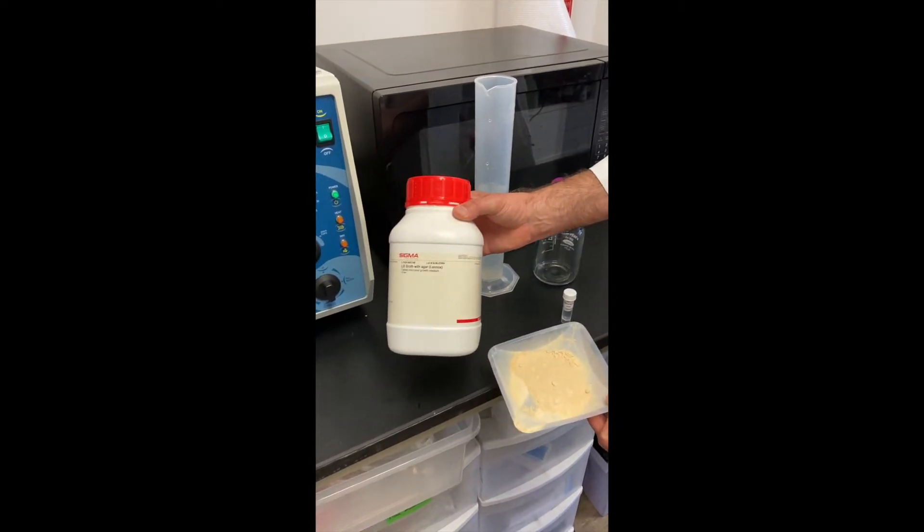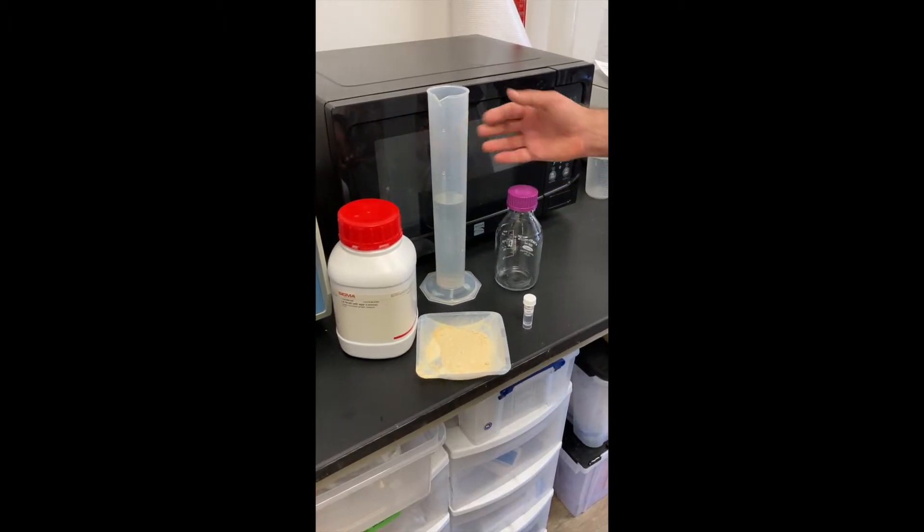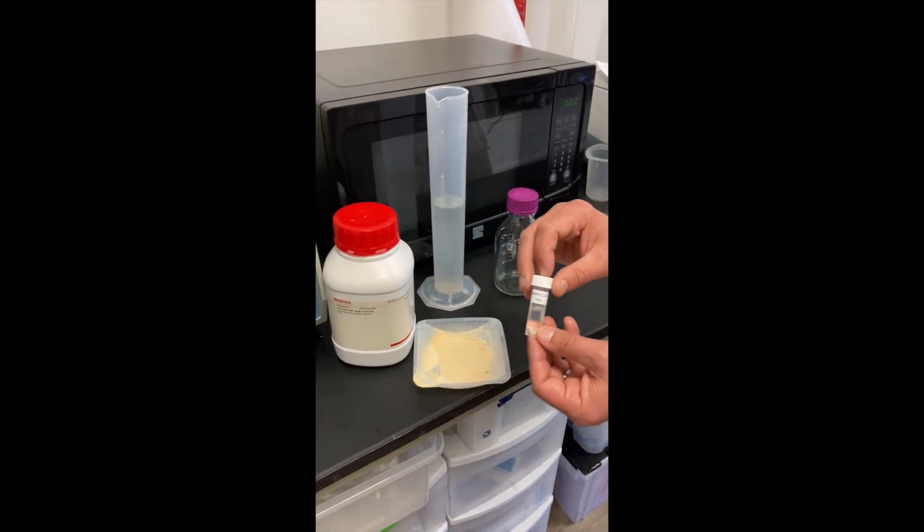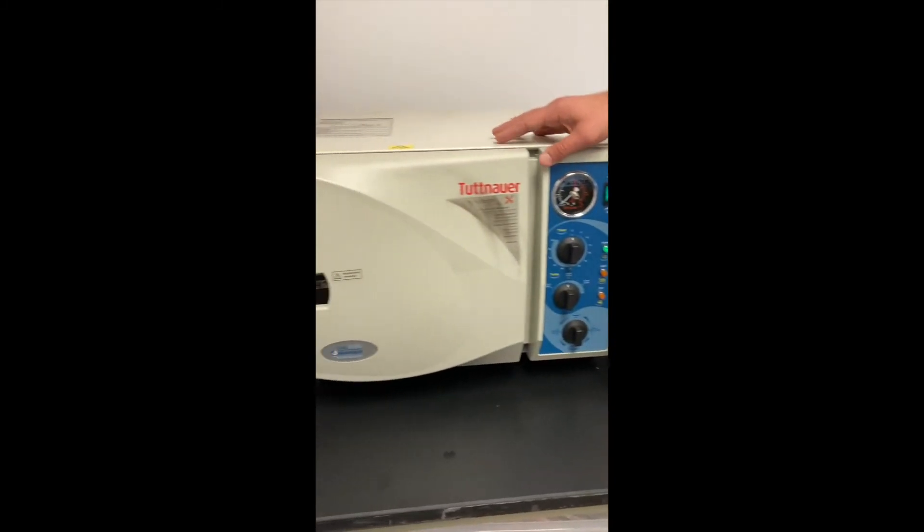To do that, as before, we'll need powdered LB agar, water, but this time we will add ampicillin, a large glass bottle, and an autoclave.